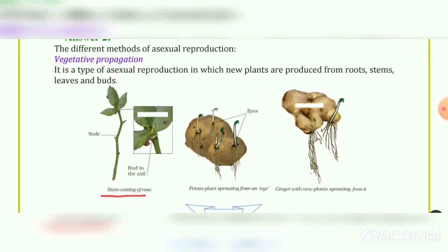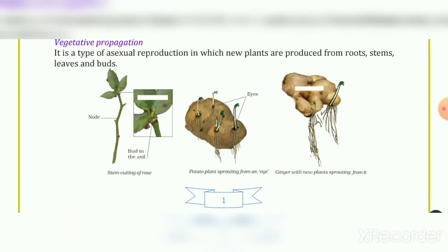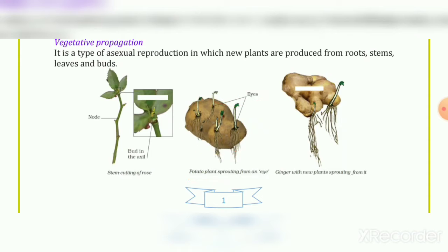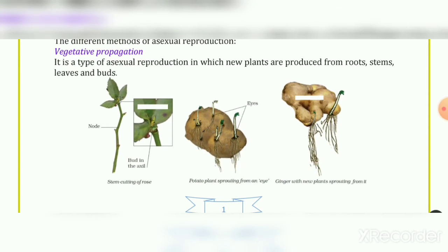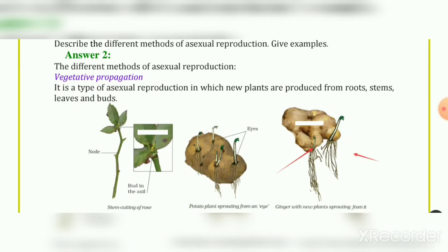We can see stem cutting of rose, which we have already studied in the chapter - it has a node and a bud in the axil. Next, potato plant sprouting from an eye - the eye of the potato. Then ginger with new plants separating from it, as shown in the picture.